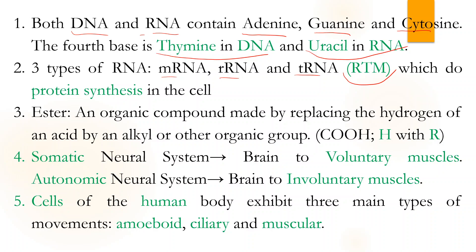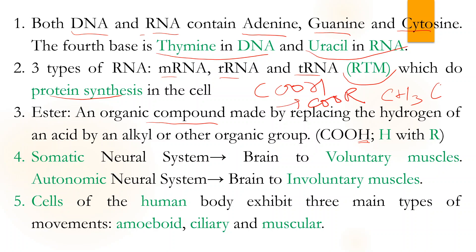RNA's main function is protein synthesis. Next, an ester organic compound is formed when we replace hydrogen with any alkyl group like CH3 or C2H5 or anything. The general formula is COOR, where R we call the alkyl group.